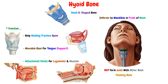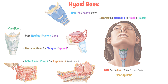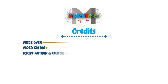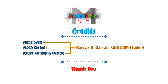So these were almost all the important details and a brief explanation about the auditory ossicles and the hyoid bone, which are the second and the third regions in the axial skeletal system. I hope what I said makes sense. See you in the next video, goodbye.